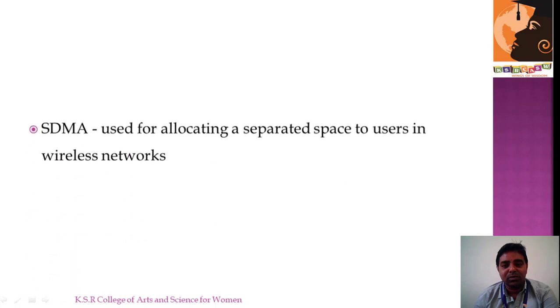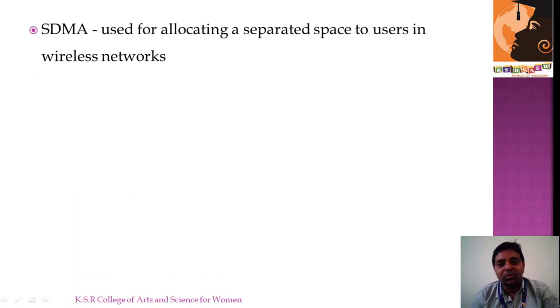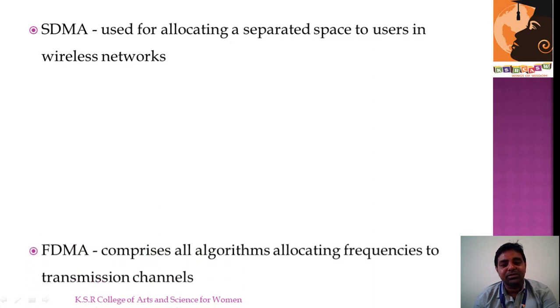Let's jump to the topics. Talking about the technologies: SDMA, FDMA, TDMA, and fixed TDM. SDMA is used for allocating a separated space to users in wireless networks. Users meaning the mobile technology and gadgets being used here are allocated different spaces.